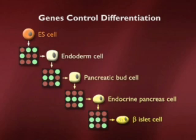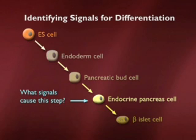Here are pictures of the DNA chips from my last lecture showing the progression. So our challenge is to figure out how to tell that cell at each stage what it should become. I'm going to give you one example of how we discover the signals responsible for instructing these cells — specifically, the signals at this step. What causes this step to occur?